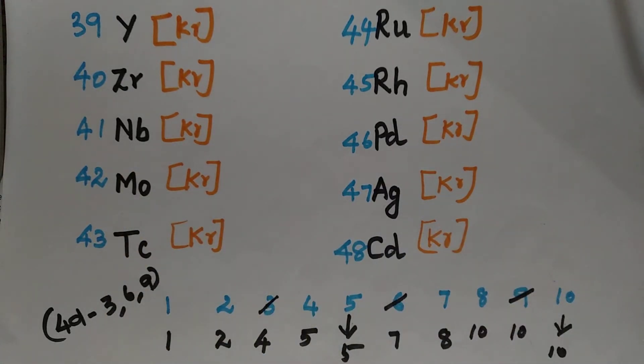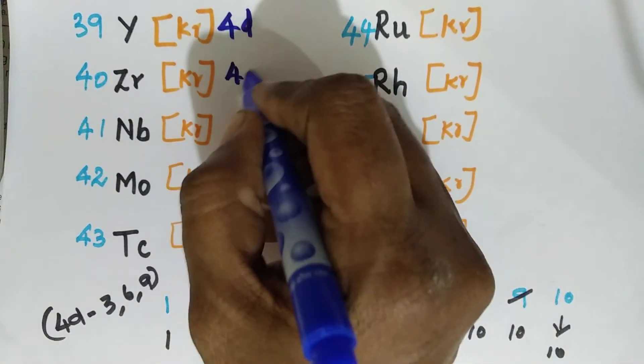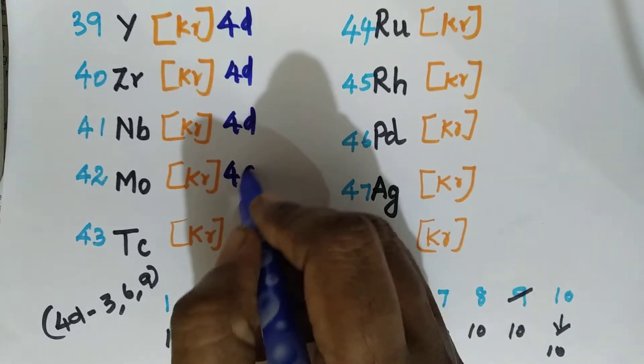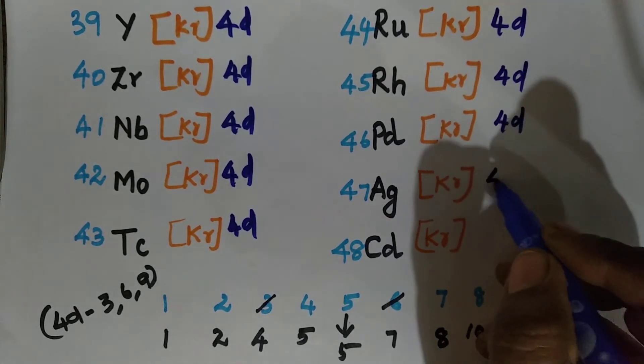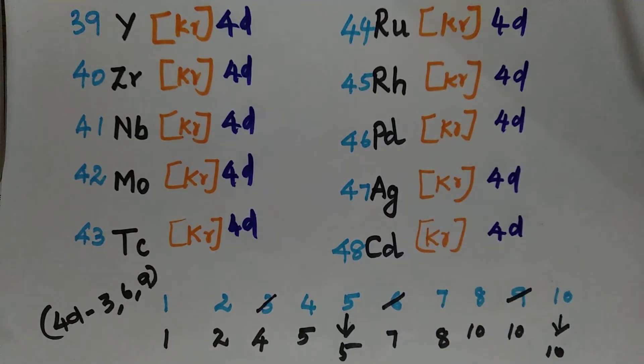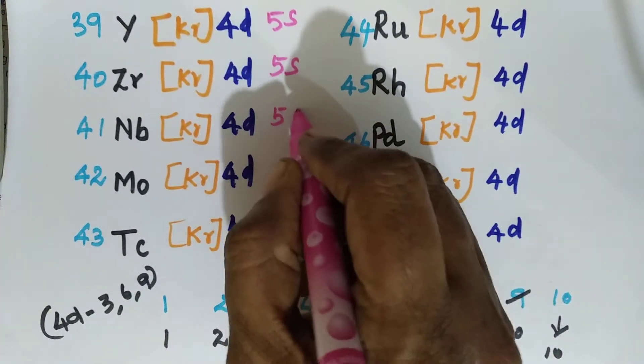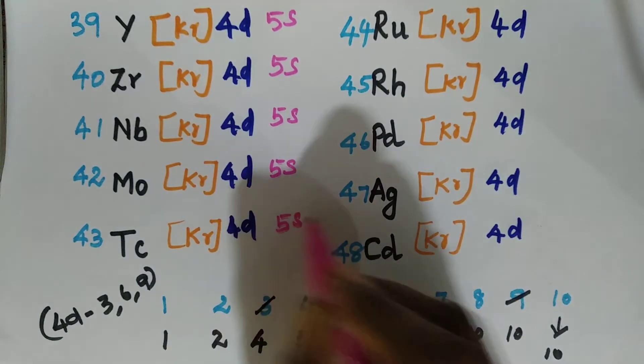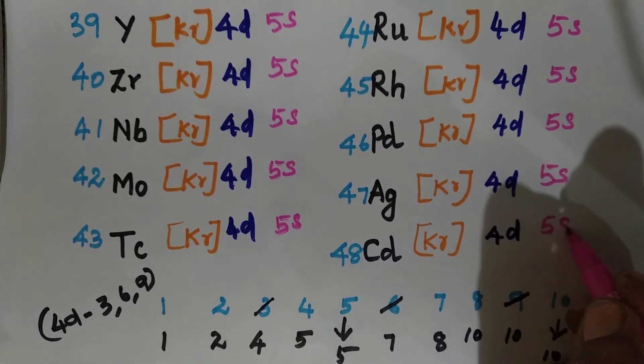Now we write down that 4D subshell. So let me write down that 4D subshell everywhere. As I told you, we write first 4D only, since the 4D got started filling down. So we are writing down 4D first. Then only 5S. Because this is 4D and 5S configuration. The outermost shell is 4D, 5S configuration. So I write all that 5S for all the elements.